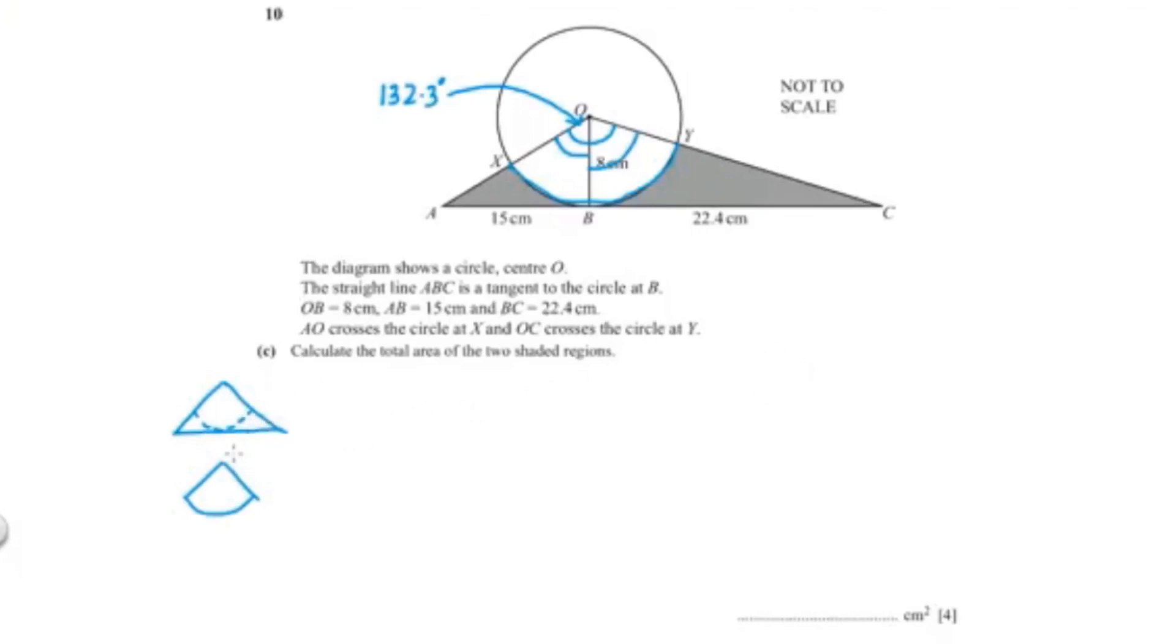So first let's find the area of the triangle and that would be 1 over 2 base times height. So 1 over 2, our height is 8 and our base is 15 plus 22.4. And so the area for our triangle is 149.6.